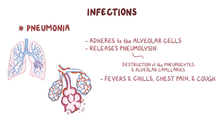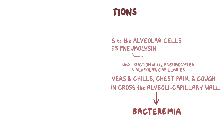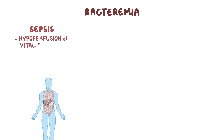In severe cases, strep pneumoniae can cross the alveolar capillary wall and enter the blood, resulting in bacteremia. Eventually, bacteremia can cause serious problems, like sepsis, which can lead to hypoperfusion of vital organs.